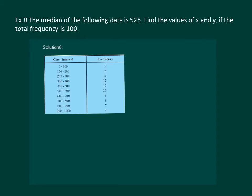Let us read the question. The median of the following data is 525, find the value of x and y if the total frequency is 100. It is given in the question that total frequency is 100, means n is equal to 100. Also median is equal to 525.